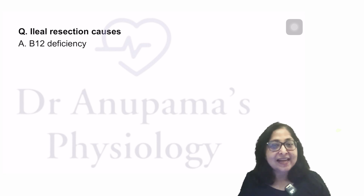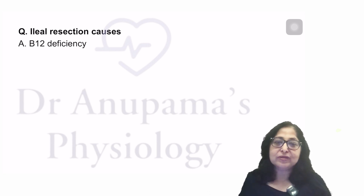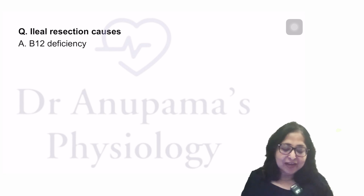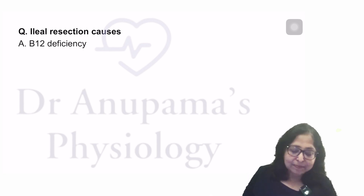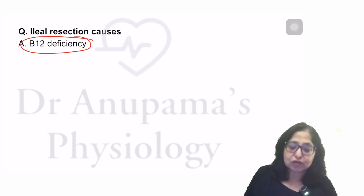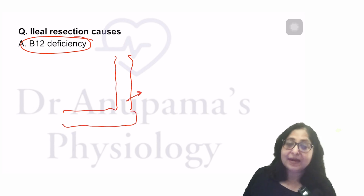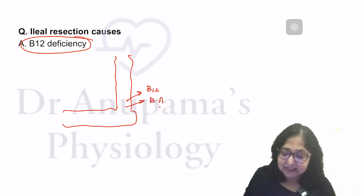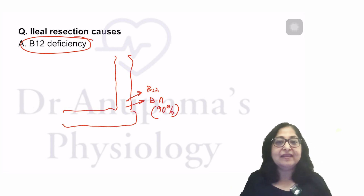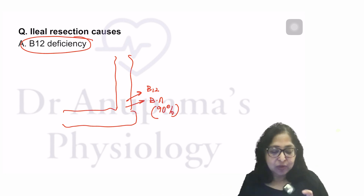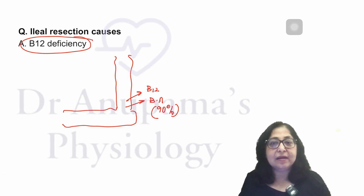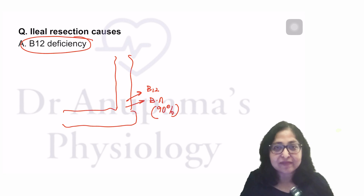There was a question on ileal resection. I do not know the exact stem or options, but if the question involves ileal resection, the answer is B12 deficiency. What is absorbed in the distal ileum is, number one, B12, and number two, bile acids — 90% of bile acids are absorbed in the distal ileum. So ileal resection will cause B12 deficiency and B12 needs to be replaced.